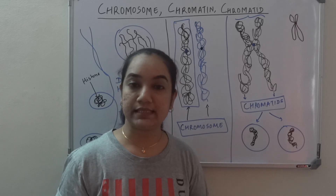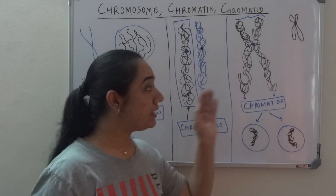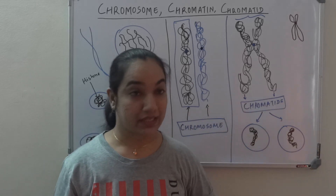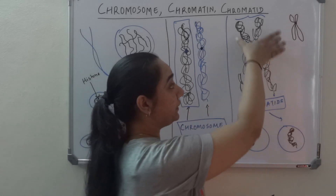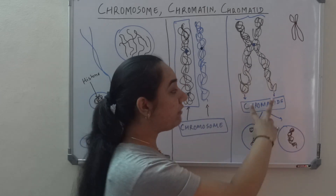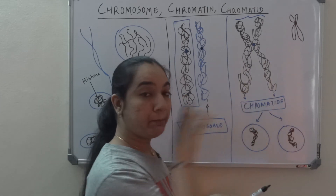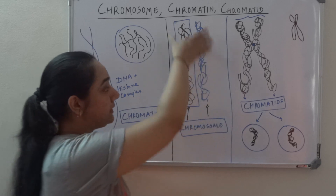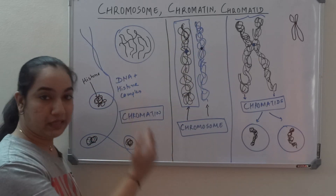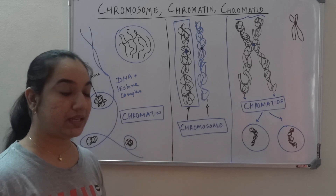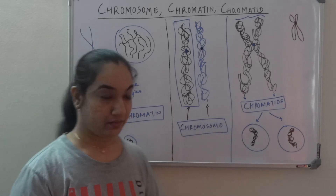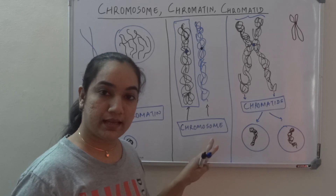When doing karyotyping, we are freezing the cell in the metaphase stage where the chromosome has duplicated but not yet separated. That is why you observe this particular phase — it is one chromosome but having two chromatids. In a cell the chromosome is present in this form. So that is the difference: you have DNA plus histone initially where the DNA is not condensed — a thread-like structure — and that is called chromatin.